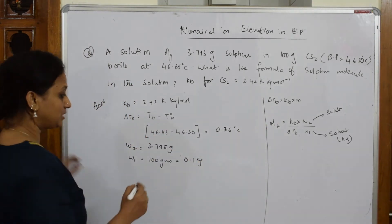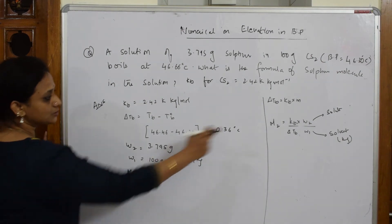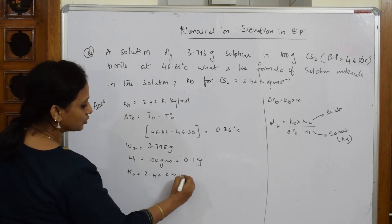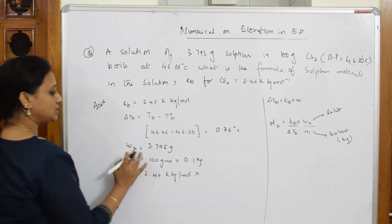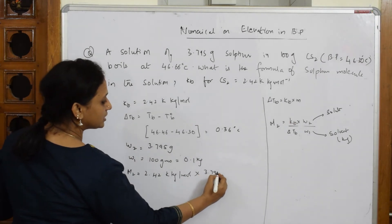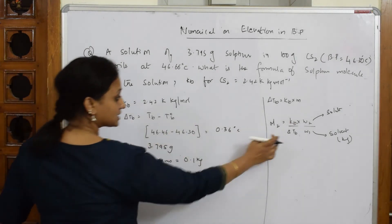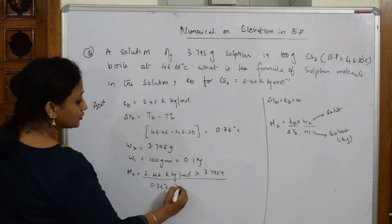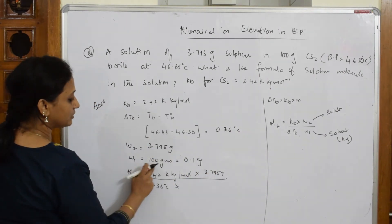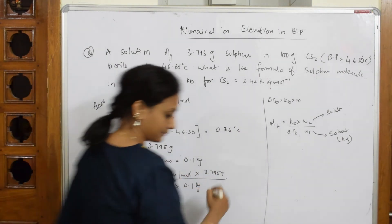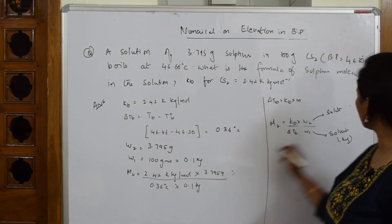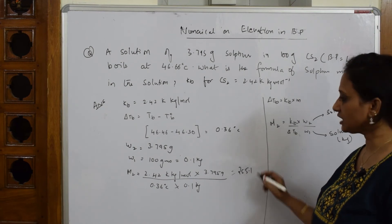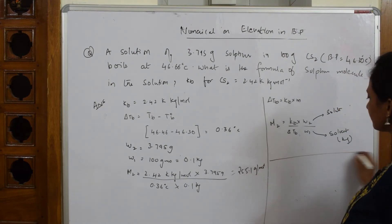Let's substitute in the formula and find out the answer. M2 is equal to what is Kb given to me: 2.42 K kg by mole into what is w2 given to me, it is 3.795 grams, divided by what is delta Tb given to me, it is given to me, I've got answer of 0.36, into what is w1, w1 is 0.1 kg. Simple, isn't it? Done. Now once you get everything, once you solve, you get an answer of almost, you know, 255.1, okay, gram per mole. This is over, but I still have to solve the numerical.